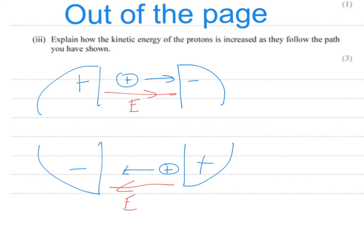You have to explain that whenever the proton finds itself in the gap, it always finds the electrode in front of it is a negative one. The frequency of the AC needs to switch polarity while the proton is completing its loop inside the electrode — switching which polarity the two sides of the D's are set to — so that the proton in the upper half and the proton in the lower half both keep finding a negative electrode ahead of them. That's what you need to describe to get your marks.